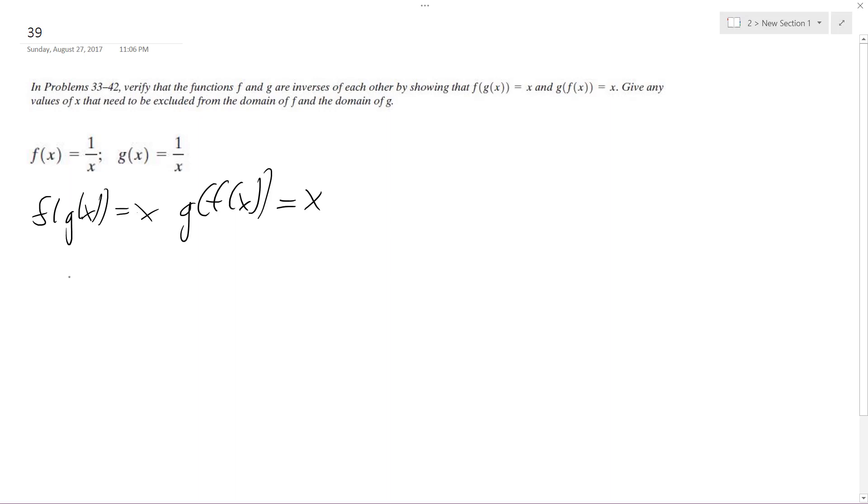So what I do here is plug these in. I get 1 over, and where x is for g of x is 1 over x. So it's the same thing as 1 times x over 1. Now, you cancel out the ones and then you just get x.